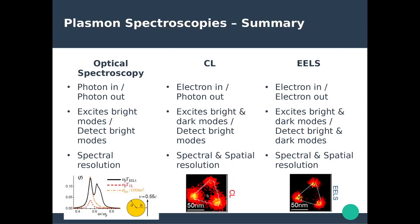EELS is essentially the top technique: you send electrons in and collect the electrons on the way out. You can excite both bright and dark modes and detect both of them — a big advantage over cathodoluminescence. You can detect the interaction of dark modes with the impacting electrons, giving both high spectral and spatial resolution. EELS has higher resolution than cathodoluminescence, essentially because higher-velocity electrons are used in EELS.